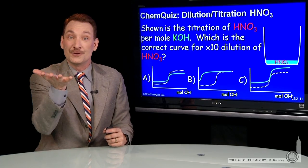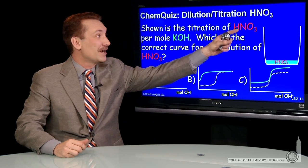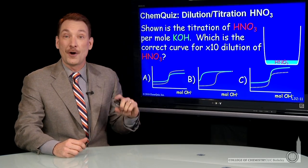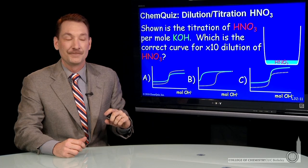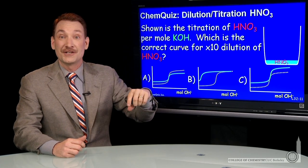Let's look at a titration where we dilute the solution and then titrate again. So I'm going to titrate the strong acid, nitric acid, HNO3, with the strong base, potassium hydroxide. I'm then going to dilute it and do the titration again.